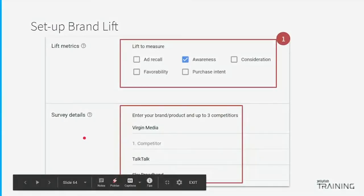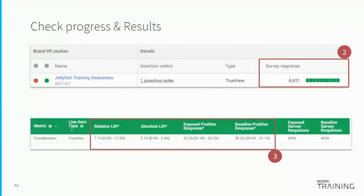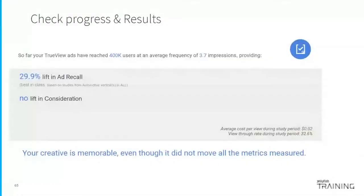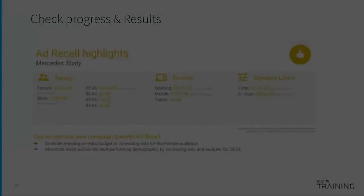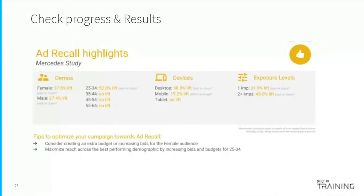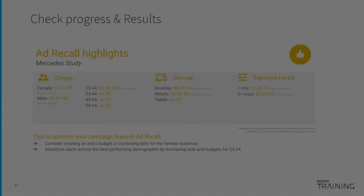That's essentially what a brand lift study does. You set it up in the system and you can find the results in platform. You can see which measures — whether people skipped your videos or what impression or frequency works best. This is how you see the progress and results of your specific study in the system.